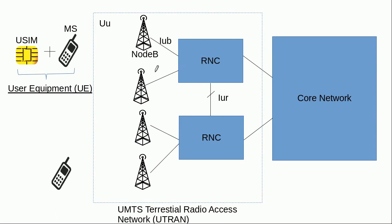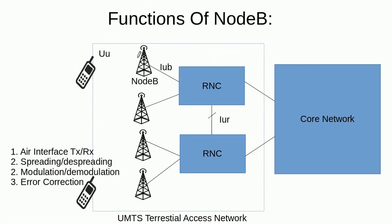The interface between the Radio Network Controller and Node B is called the Iub interface. The interface between Node B and the mobile station is known as the Uu interface. This is an air interface based upon the WCDMA technology. Because this air interface is based on WCDMA access technology, we call these networks 3G WCDMA UMTS systems.